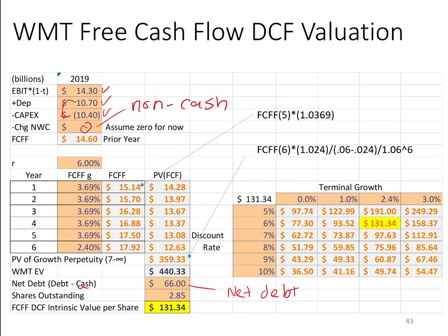We'll assume the change in net working capital is zero — it was very close when I looked at the numbers. So the FCFF for Walmart in 2019 was $14.6 billion. I'll apply the long-term growth rate from Wall Street analysts of 3.69% to the $14.6B for the next five years, then use a 2.4% growth rate for years six through infinity, take the present value of all those cash flows, subtract net debt, divide by shares, and get a valuation.